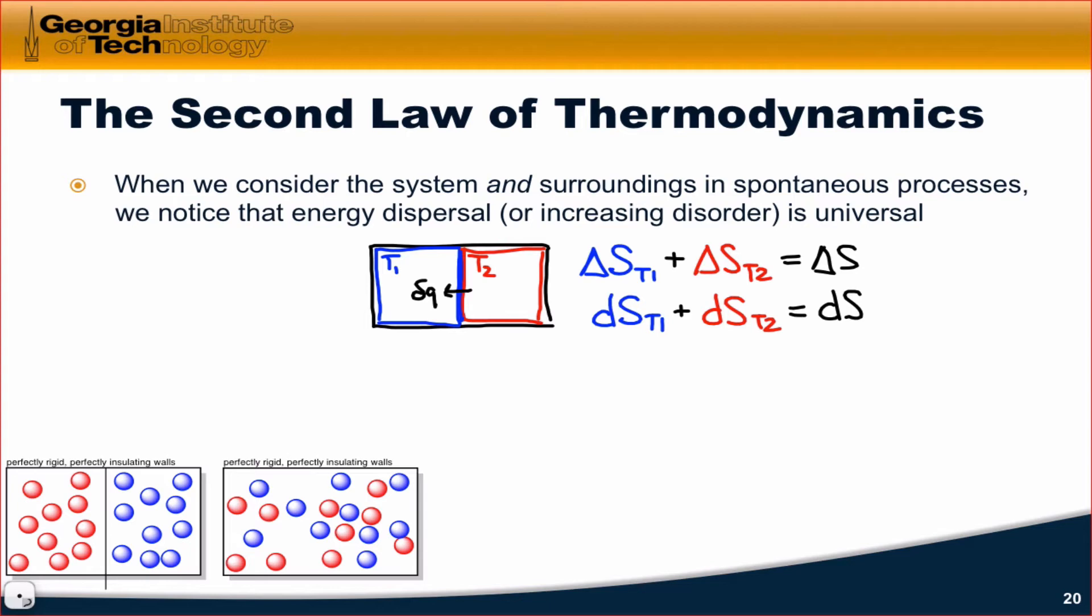Now what are each of these in this process? Well, remember the classical definition of an infinitesimal entropy change. dS equals del Q_rev, very tiny reversible heat, divided by the temperature at which that heat transfer occurs.